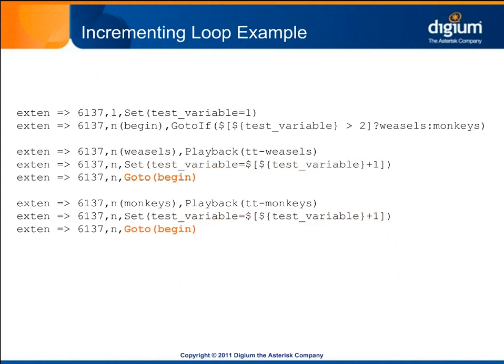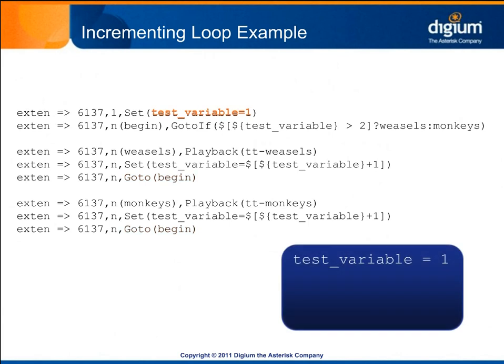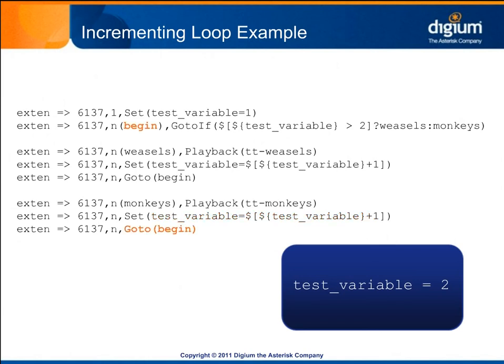When this extension is first dialed, test variable is set to one, and the GoToIf expression is false. So the call is routed to the monkeys label where ttmonkeys is played. Then test variable is incremented so it stores the value of two, and the call is routed back to the begin priority, which calls the GoToIf application again. Two is not greater than two, so the expression is again false, and the monkeys label is followed. ttmonkeys is played once more. Test variable is then incremented to three, and the call is again routed back to the GoToIf.